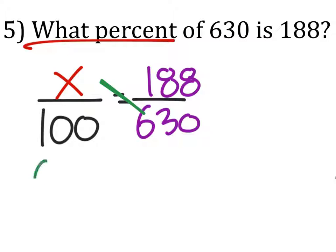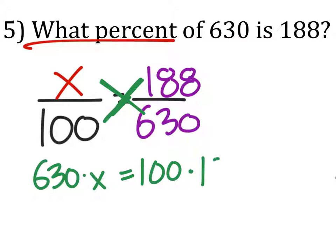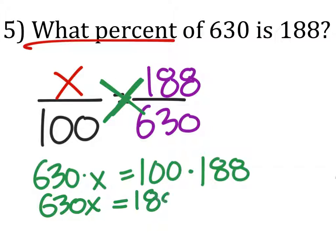So this is 630 times X equals this other cross-multiplication, which is 100 times 188, which I can do in a calculator. But I actually don't need a calculator for this one yet. This one would just be 18,800.